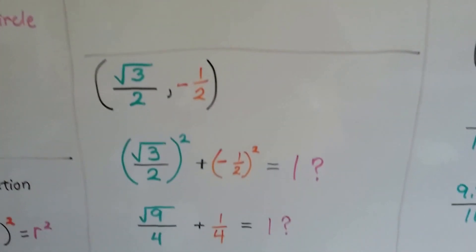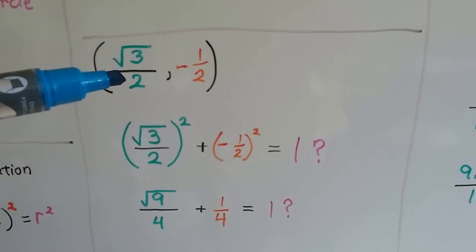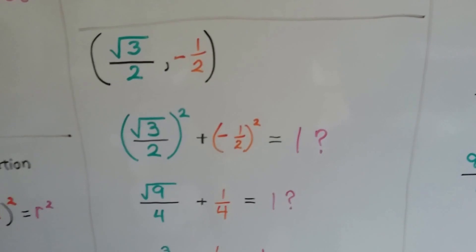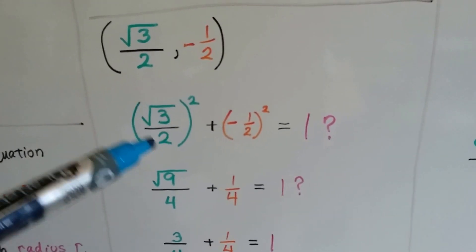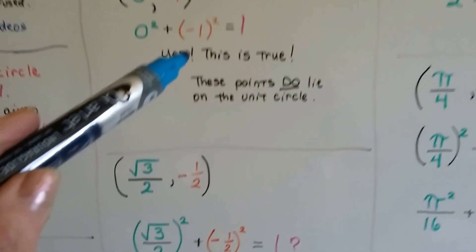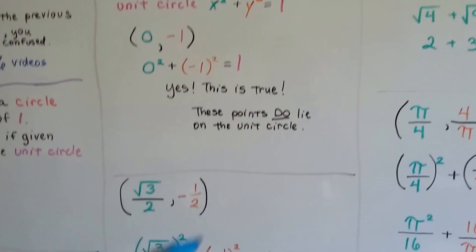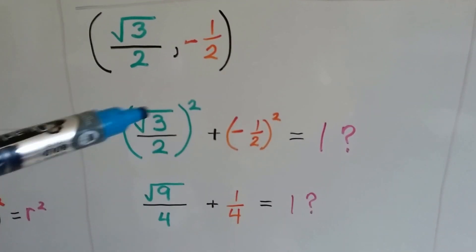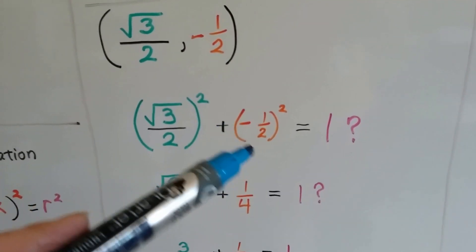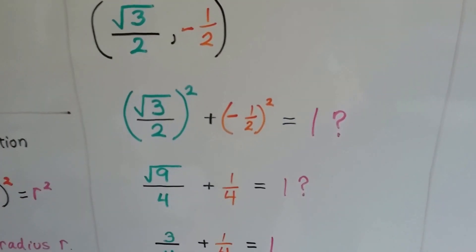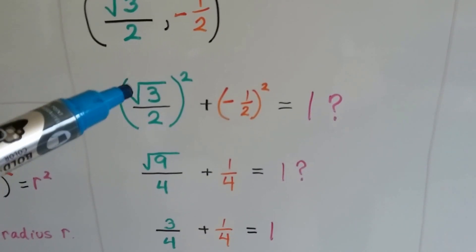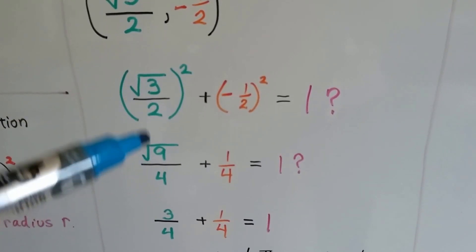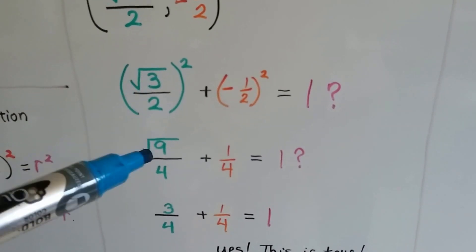Let's take a look at this one. We've got the square root of 3 divided by 2 for x, and we've got a negative half for y. We put it into our equation of x squared plus y squared equals 1. Does this x value plus this y value equal a 1? Well, if we square the square root of 3, we get the square root of 9 because it's square root of 3 times square root of 3. It's a square root of 9.